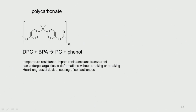Polycarbonate has good temperature resistance, impact resistance, and is transparent. It can undergo large deformations without cracking or breaking. It is used in heart-lung assist devices and for coating of contact lenses. Polycarbonate is almost like glass — you can see through it — so it is used in cosmetic and strong medical device applications.